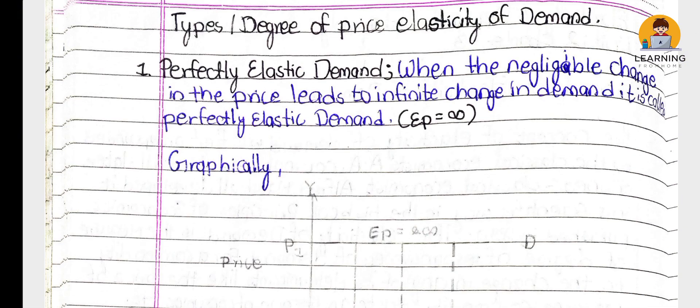Perfectly elastic demand: when the negligible change in price leads to the infinite change in demand, it is called perfectly elastic demand. If price changes, demand will increase infinitely. This is perfectly elastic demand.